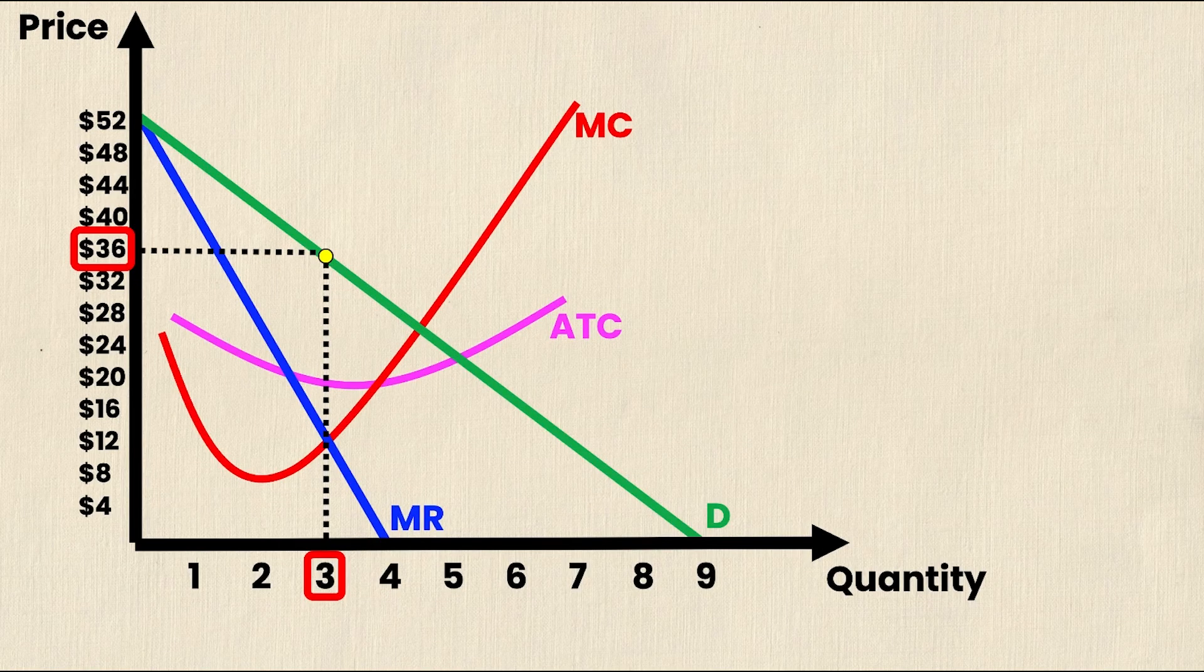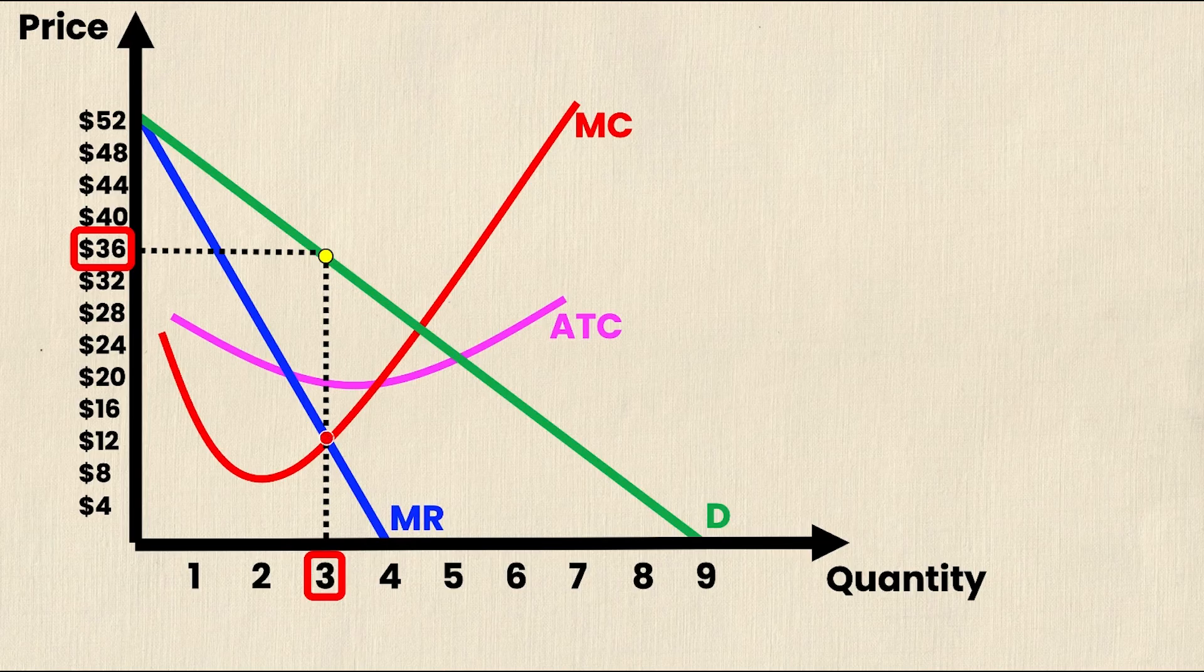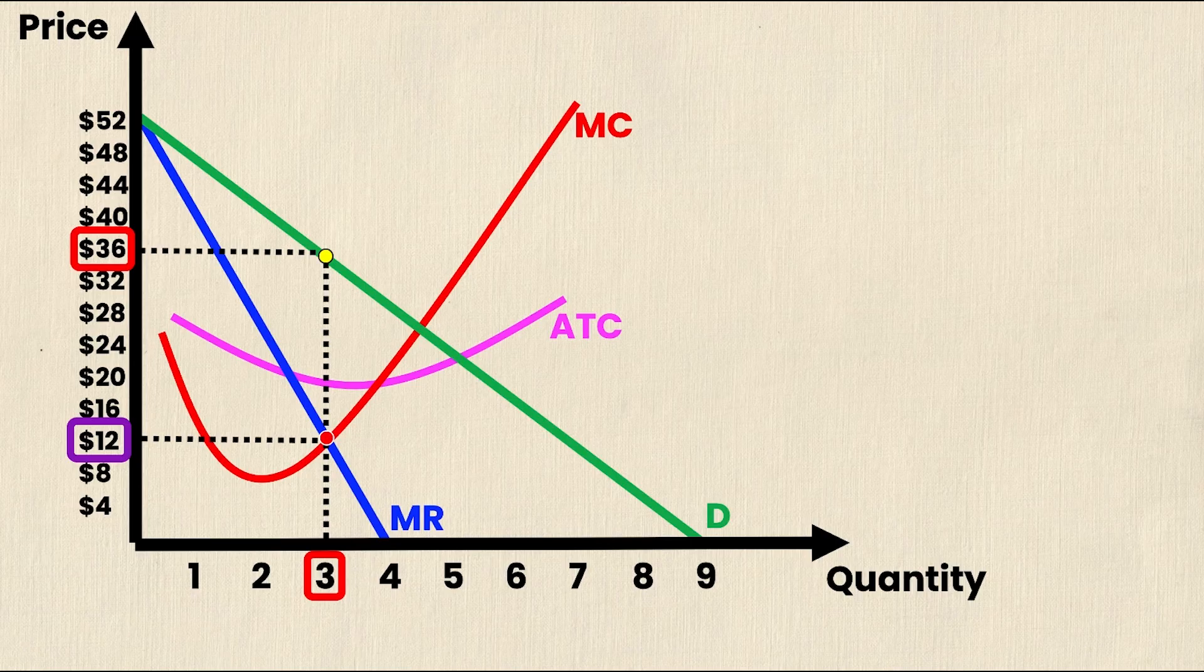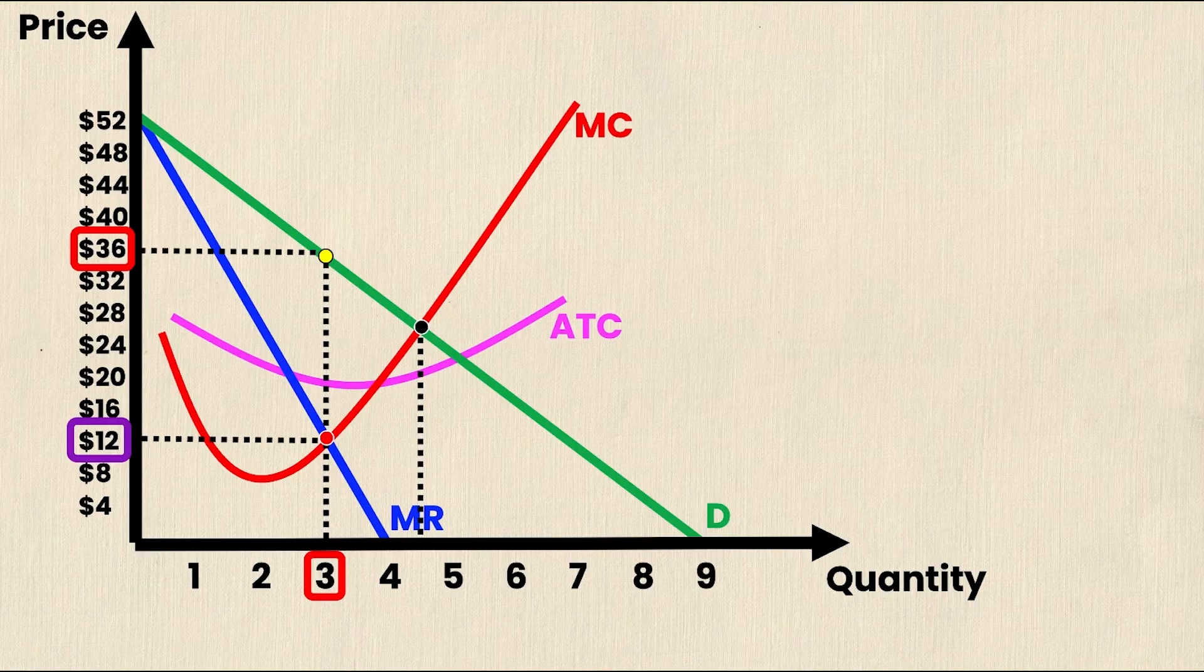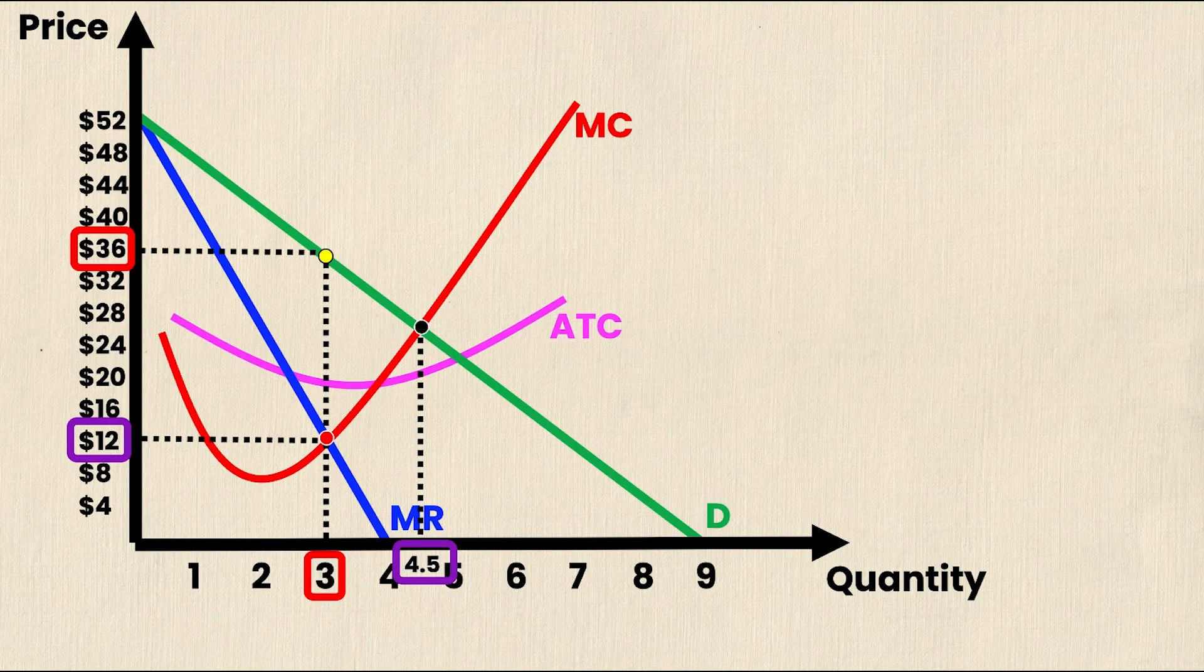So for deadweight loss, we are interested in the point where marginal cost and marginal revenue intersect, which is at $12. And we're also interested in the point where marginal cost and demand intersect, which in this case is at a quantity between 4 and 5. So we'll call it 4.5.